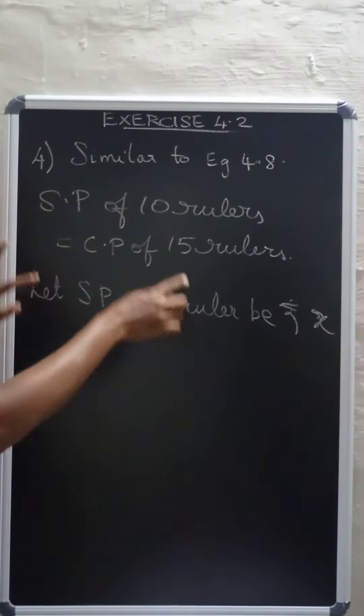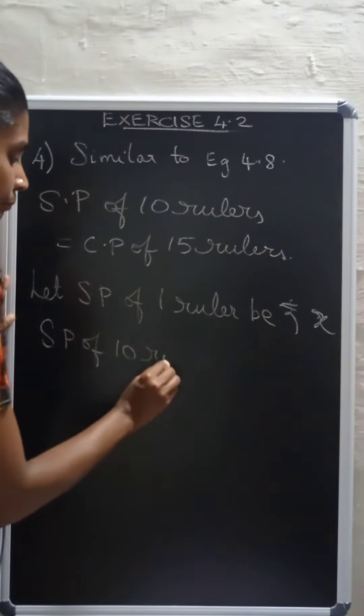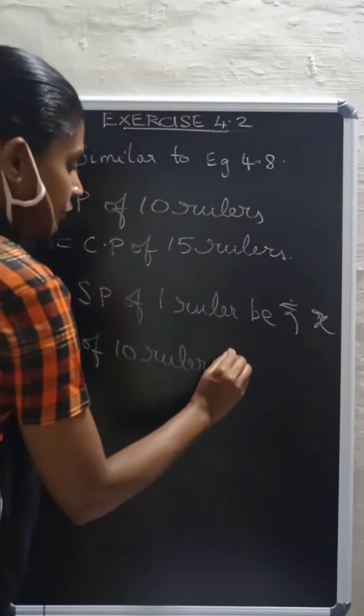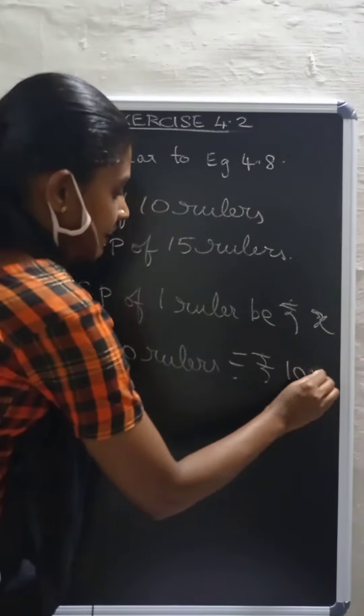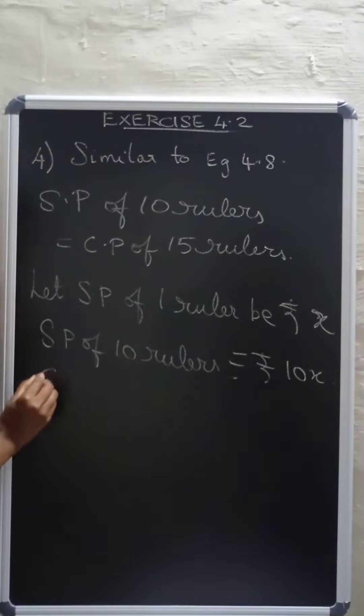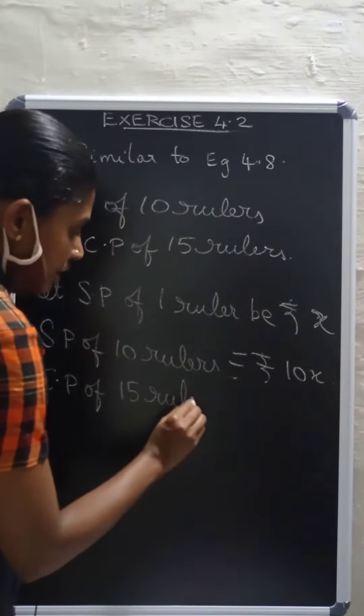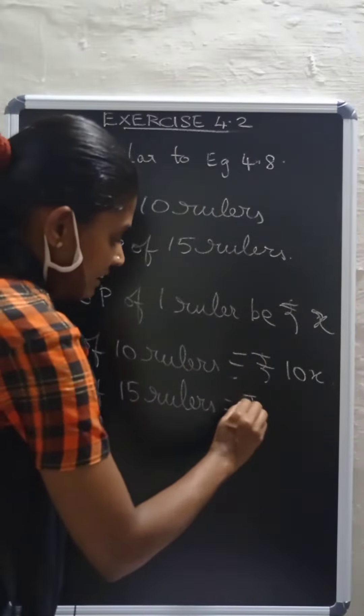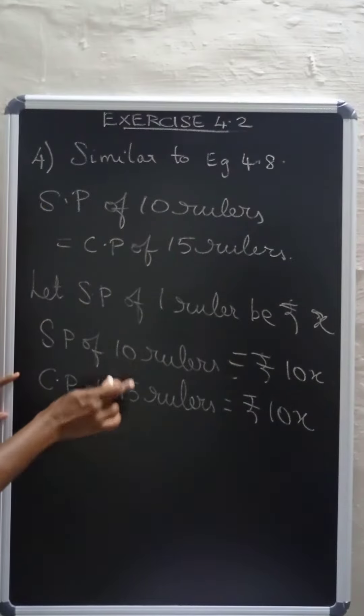Selling price of 10 rulers is equal to rupees 10x, which is equal to cost price of 15 rulers. So, cost price of 15 rulers is equal to rupees 10x.